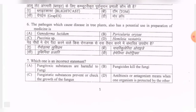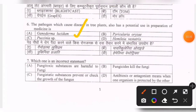Next question: the pathogen which causes disease in tree plants and also has potential use in preparation of medicine — options are Ganoderma lucidum, Pyricularia oryzae, Puccinia species, Hemileia vastatrix. The correct option is the first one — Ganoderma lucidum.